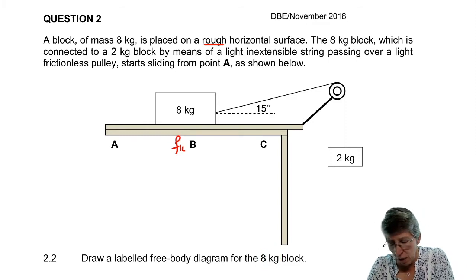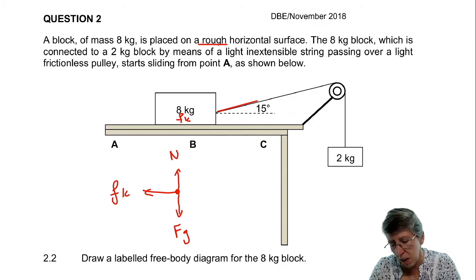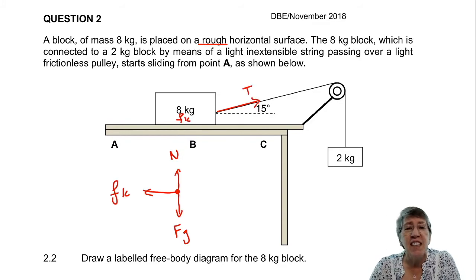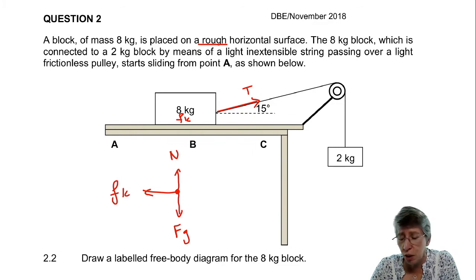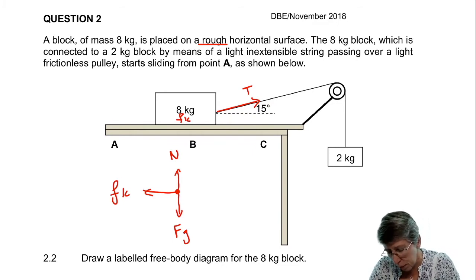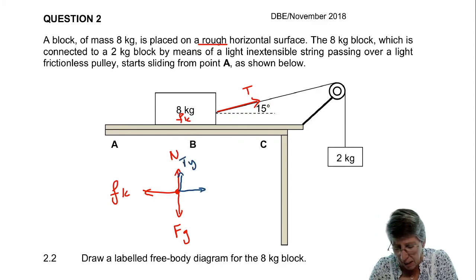For that 8 kg block, we've got the tension in this rope. Since that tension is working at an angle, I can either draw the force or I can draw the components — just don't do both. Let's choose the components: that will be T in the Y direction and T in the X direction.